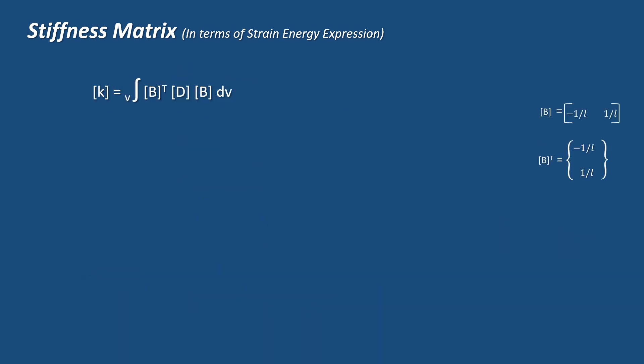Let's look at the expression in detail. Matrix B transpose is a column matrix minus 1 by L, 1 by L, and matrix B is a row matrix minus 1 by L, 1 by L.